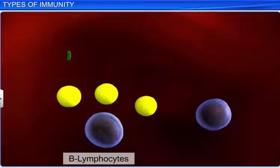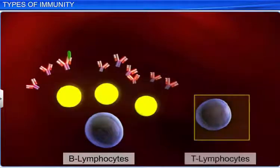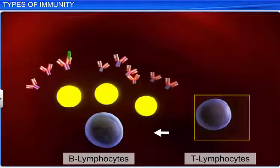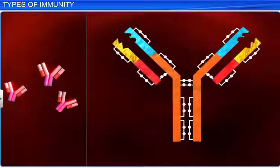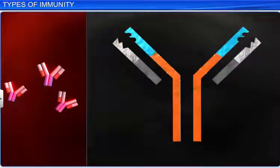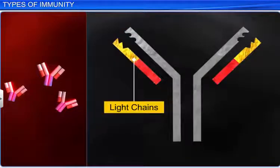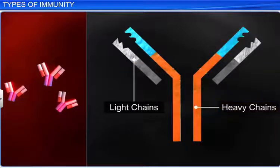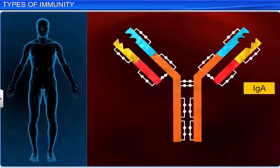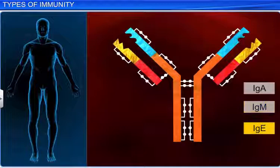B lymphocytes produce proteins to fight pathogens, whereas T lymphocytes help B cells to perform this task. The protective proteins produced by B cells are called antibodies. Each antibody molecule has four peptide chains — two small and two longer ones. The two small chains are called light chains, while the two longer ones are called heavy chains. Therefore, an antibody is represented by H2L2. IgA, IgM, IgE, and IgG are some examples of antibodies in our body.